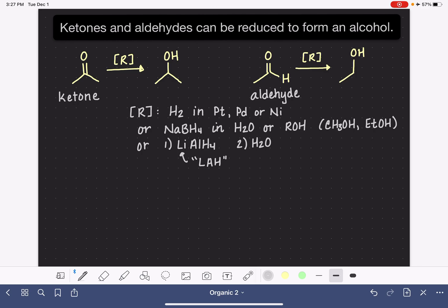NaBH4, both sodium borohydride and lithium aluminum hydride are examples of reagents that we call hydride reagents. Hydride is the name of the H minus ion. And I'm going to draw how we can use sodium borohydride or lithium aluminum hydride to perform this type of reduction reaction.